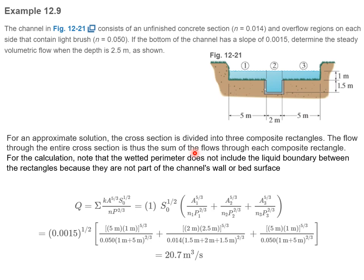Let's take a look at example 12.9. The channel consists of an unfinished concrete section with n equals 0.014 and overflow regions. Each of the sides contains light brush. In other words, you have a channel on this side and this side has brush, so it has a different n value. It's 0.050. If the bottom of the channel has a slope of 0.0015, determine the steady volumetric flow rate when the depth is 2.5 meters as shown. It's 1 meter from the rough brush to the surface, and it's 2.5 meters from the bottom of the channel up to the top.